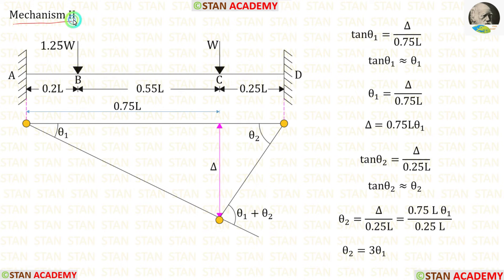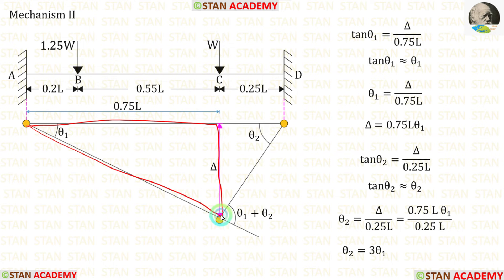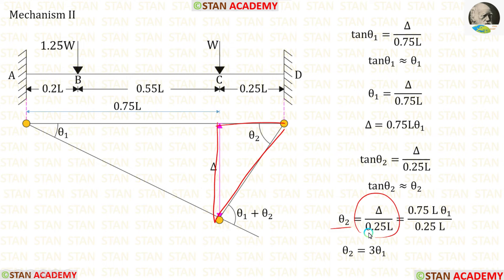Now let us look at mechanism two. In this mechanism, we assume the third plastic hinge occurs under the point load W at point D. Let us keep this angle as theta 1 and this angle as theta 2, so this angle should be theta 1 plus theta 2. Using the left triangle, theta 1 equals delta upon 0.75L, so delta equals 0.75L theta 1. Using the right triangle, theta 2 equals delta upon 0.25L. Substituting for delta and eliminating L, we get theta 2 equals 3 theta 1.